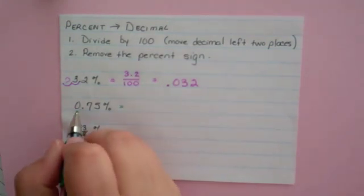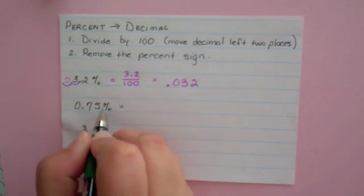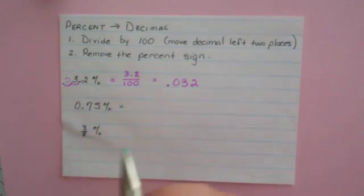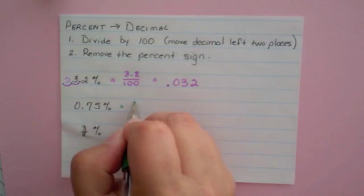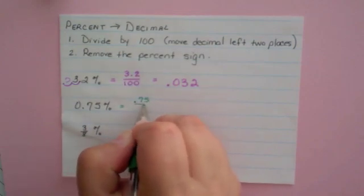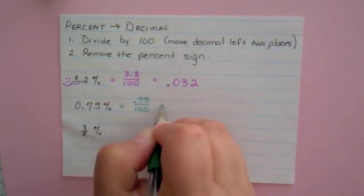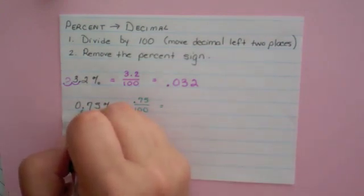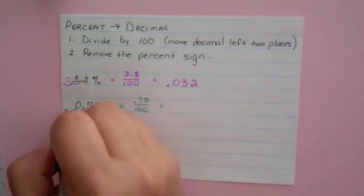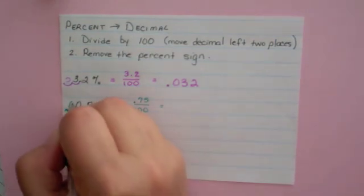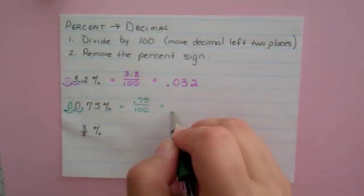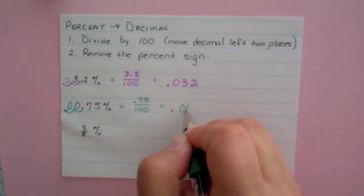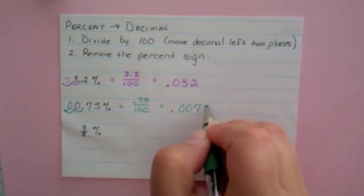0.75%. So again, either look at it as .75 divided by 100, and remember that that says take your decimal place and move it two places to the left. Notice we have to add a zero in here, so we're going to have .0075.